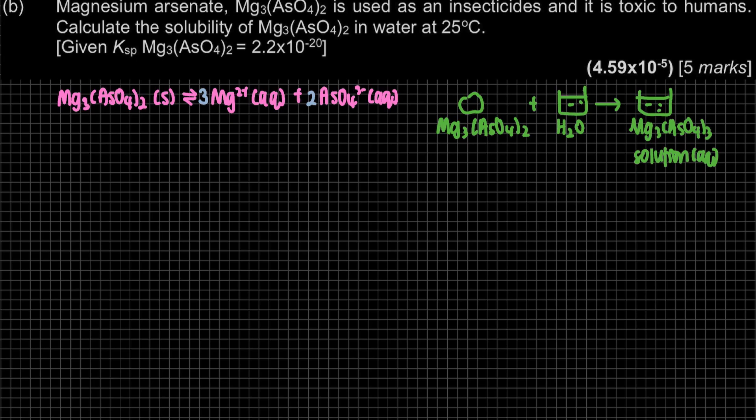The question asks for the solubility. How do we calculate solubility? Solubility, we denote it as S. It means that for each of the ions, it has its own solubility. S here, S here. But then for the solubility, must refer to the stoichiometric coefficient at the front. So here will be 3S. Here we have 2S. This is based on our ICE table.